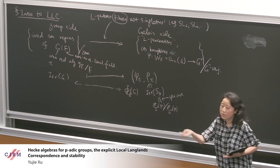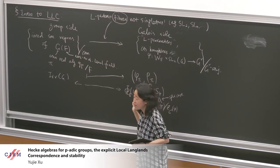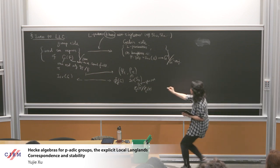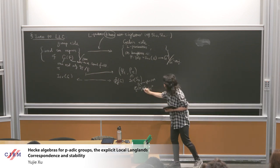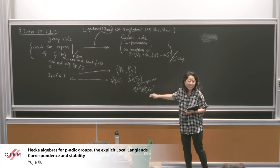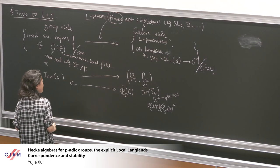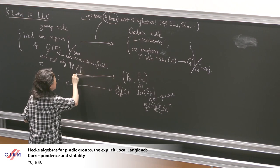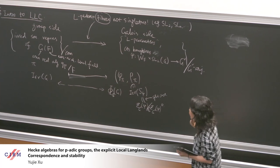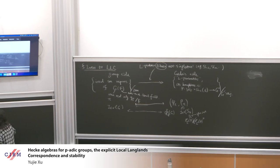Many people in the audience have worked towards proving the classical local Langlands conjecture. Let me give a very incomplete brief history. The first case was for GL_N in the local function field case, proved by Laumon, Rapoport, and Stuhler, whose proof follows a similar strategy to Drinfeld's proof for GL2.